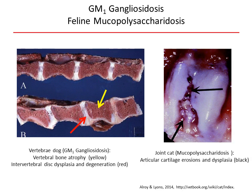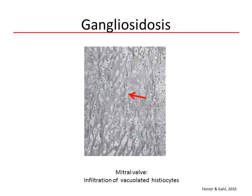GM1 gangliosides are also important constituents in extra-neuronal tissue. Figure B demonstrates skeletal abnormalities of a three-month-old Portuguese Water Dog with GM1 gangliosidosis, compared to age-matched controls in figure A. Notice the vertebrae are atrophic and appear shorter, and the intervertebral discs are dysplastic with an irregular, fragmented appearance. The image on the right highlights changes associated with feline mucopolysaccharidosis, where the articular surface of the cartilage has many erosions and is dysplastic. The histomicrograph shows the stroma of the valve cusps of the mitral valve infiltrated by vacuolated histiocytes.